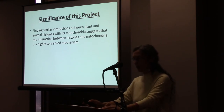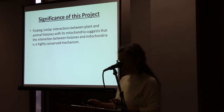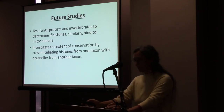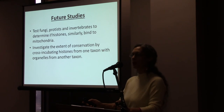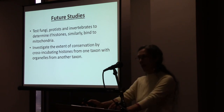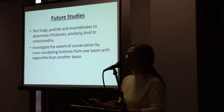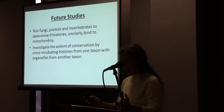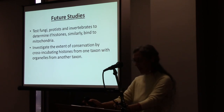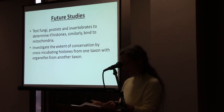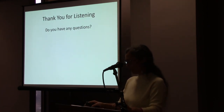This also provides researchers with additional data that can be used to control apoptosis in both plants and animals. Future studies will include investigating histone effects on fungi, protists, and other organisms to determine if a similar histone-mitochondria interaction is conserved across eukaryotes, as well as investigating cross-incubation of histones with different taxa and exploring ways to control apoptosis to the benefit of farmers and growers. Thank you very much. Are there any questions?